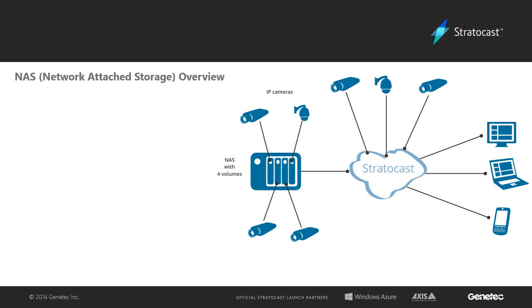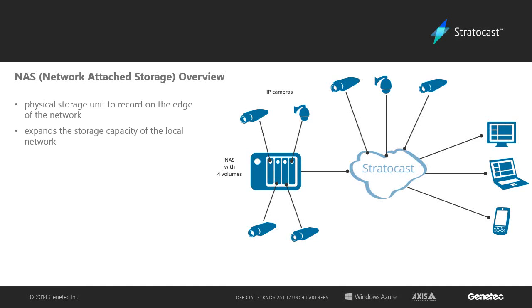Using Network Attached Storage or NAS devices in Stratocast. A NAS or Network Attached Storage device is a physical storage unit that is connected to the network using a dedicated IP address and is used to record video on the edge of the network. You can use a NAS to expand the storage capacity of your local network and safely store and share video recorded from the units on your Stratocast system.